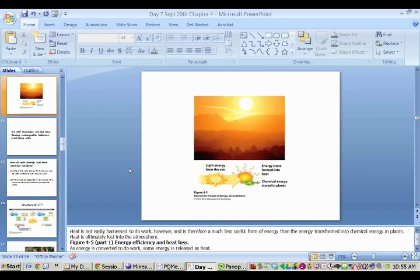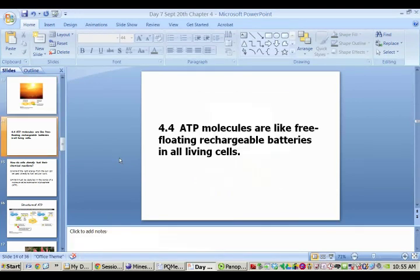The sun is releasing and emitting all of this radiant energy in the form of heat and light energy. It's being absorbed by the earth and then released back up into the atmosphere in the form of heat. Plants are storing it in the form of chemical energy.